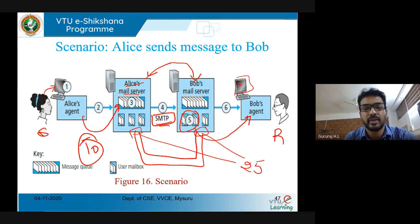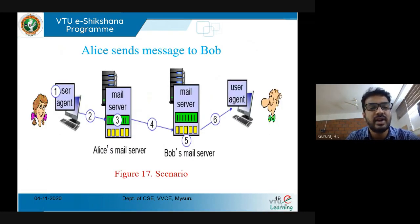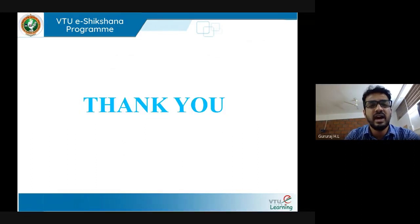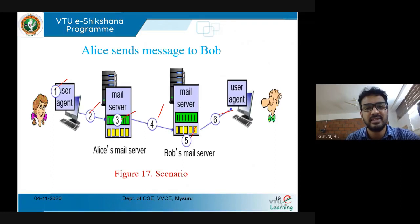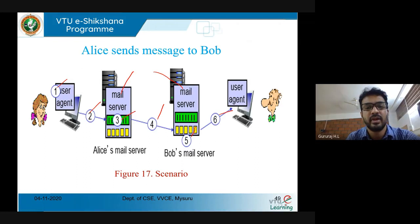This is the overall interaction between Alice and Bob. We can number the operations: steps one through three happen at the user agent level, step four happens between the mail servers using SMTP, step five places the message in the receiver's mail server, and step six delivers it to the receiver's user agent. In the next session we'll look at the commands used, the status codes, and a detailed example of how user agents interact. Thank you.